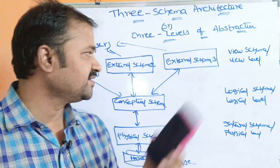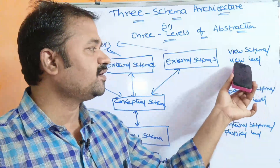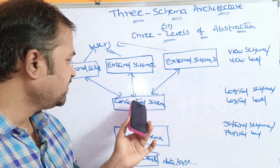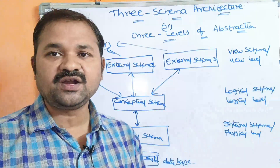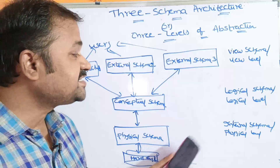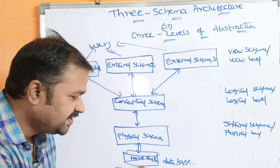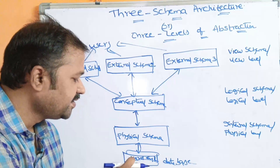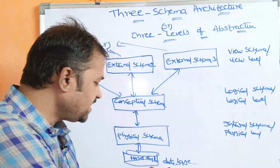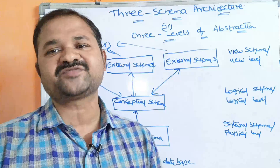We mainly have three schemas. The first one is external schema, also called view schema, view level, or external level. The second is conceptual schema, also called logical schema or logical level. The third is physical schema, also called internal schema or physical level. At the bottom we have the database, which may be stored in a hard disk or magnetic tape — though nowadays we use hard disk only.